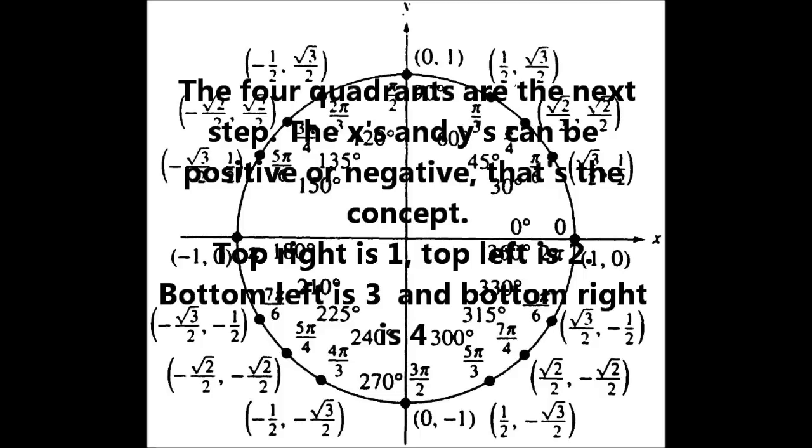The four quadrants are the next step. The x's and the y's can be positive or negative and that's the concept. The top right is one, the top left is two, the bottom left is three, the bottom right is four.